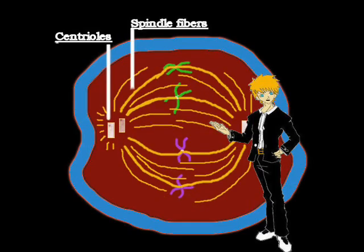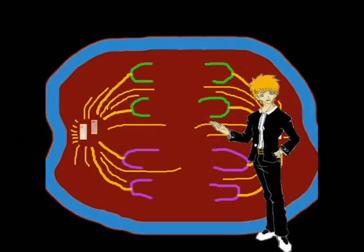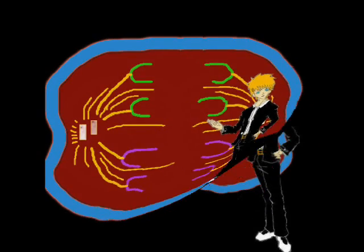We then move to anaphase, where the homologous chromosomes' centromere divides and moves them towards opposite poles, forming two genetically identical cells.